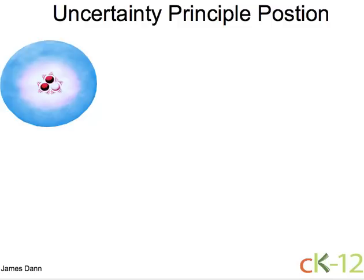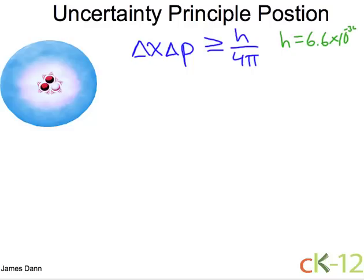The uncertainty principle is at the core of quantum mechanics, and with regards to position, what it tells you is that the uncertainty in position multiplied by the uncertainty in momentum must be greater than or equal to Planck's constant divided by 4π. Planck's constant is a very small number, something like 6.6 × 10^-34 joules seconds.